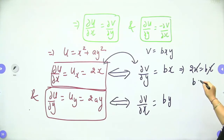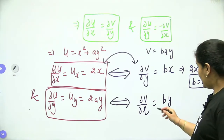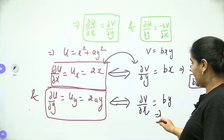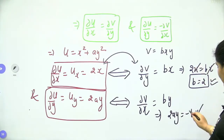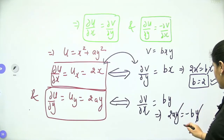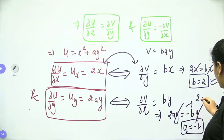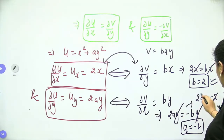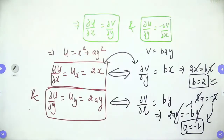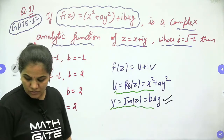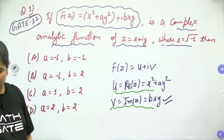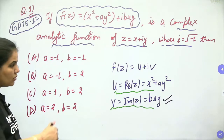Similarly, from u_y equals minus v_x: we have 2ay equals minus by. Since b equals 2, this becomes 2ay equals minus 2y. Dividing both sides, 2a equals minus 2, so a equals minus 1. Therefore the answer is a equals minus 1 and b equals 2.